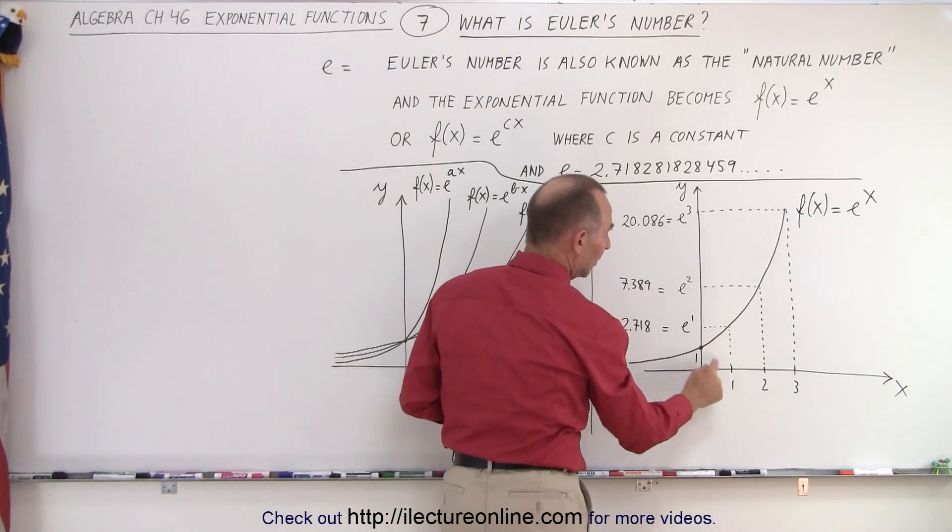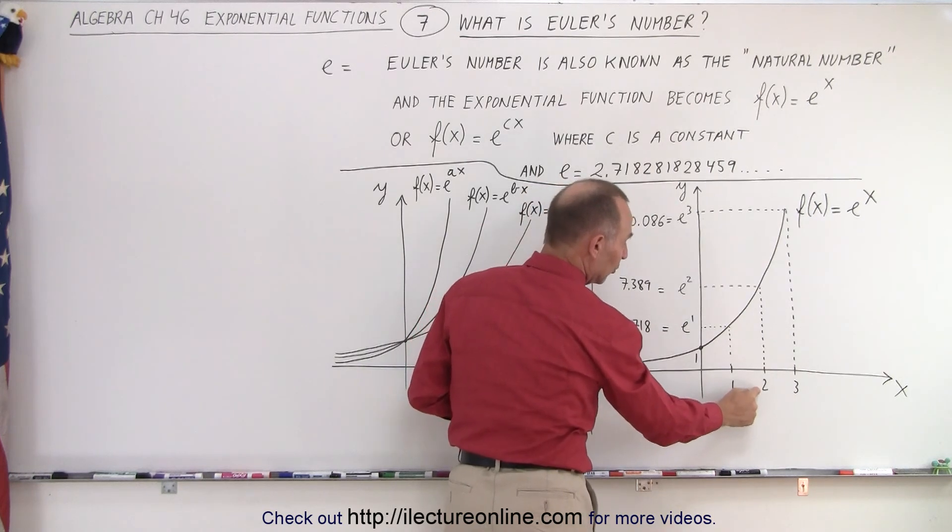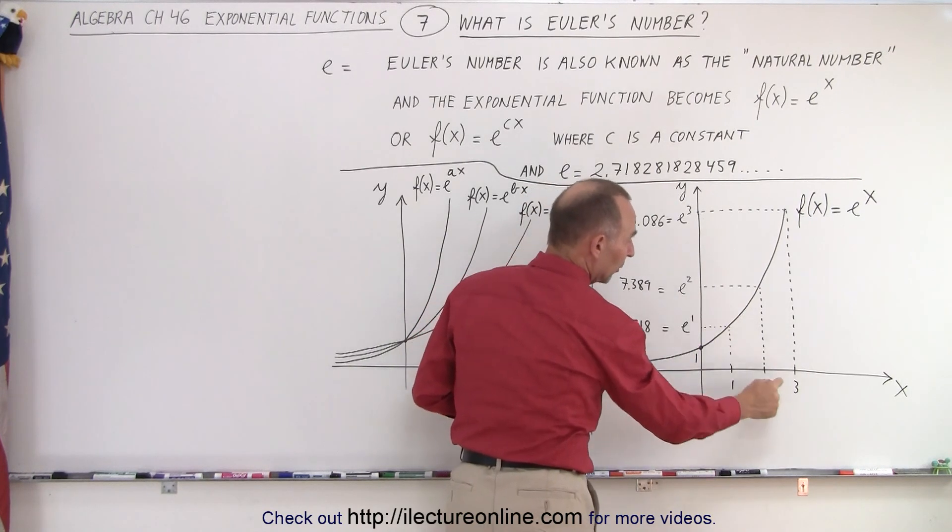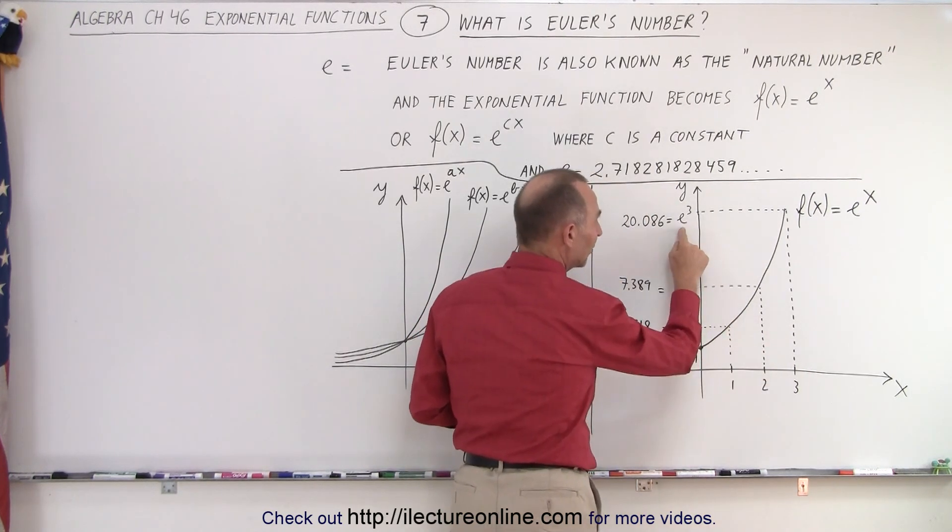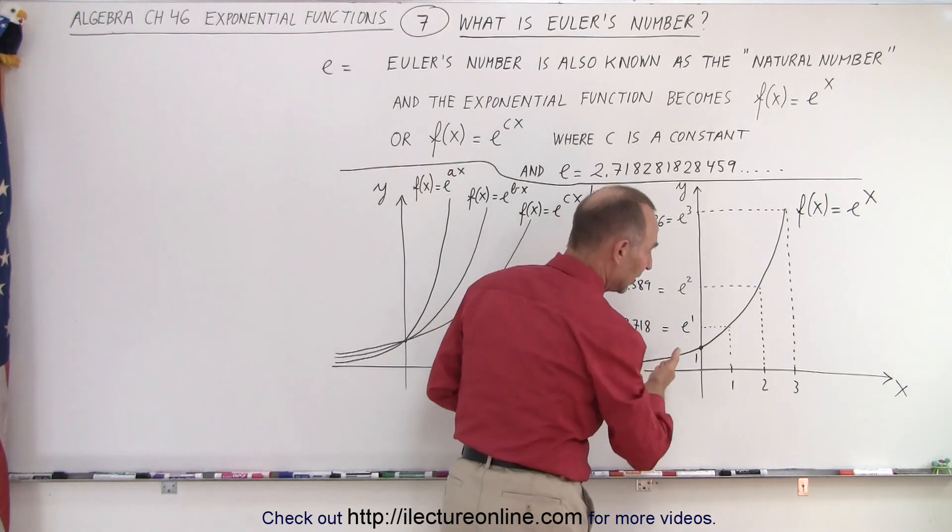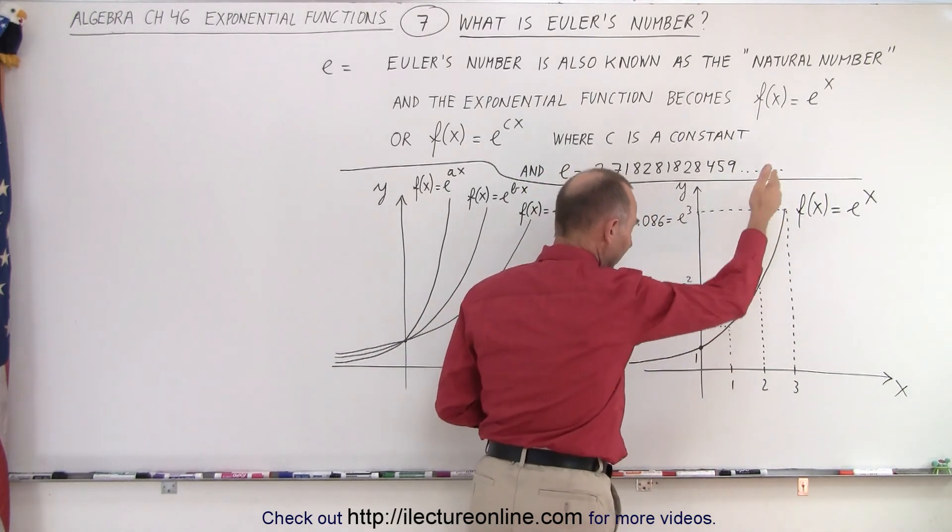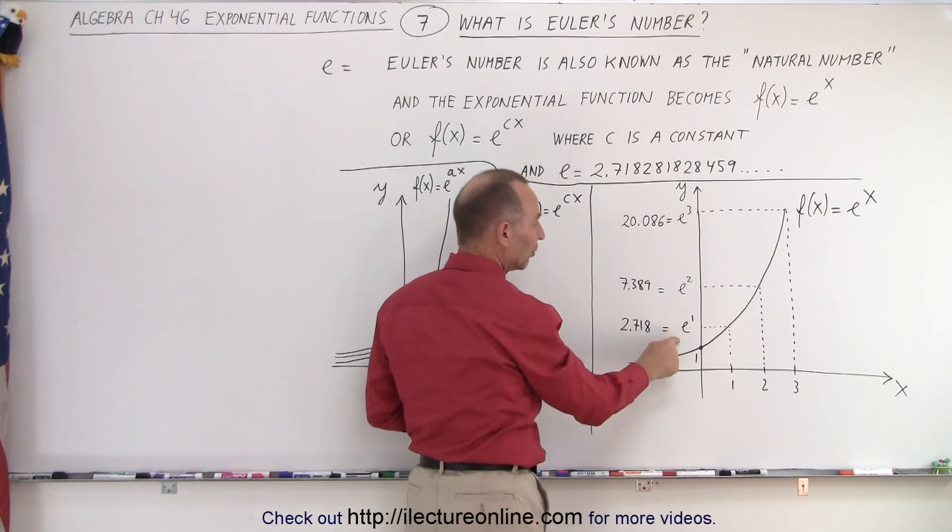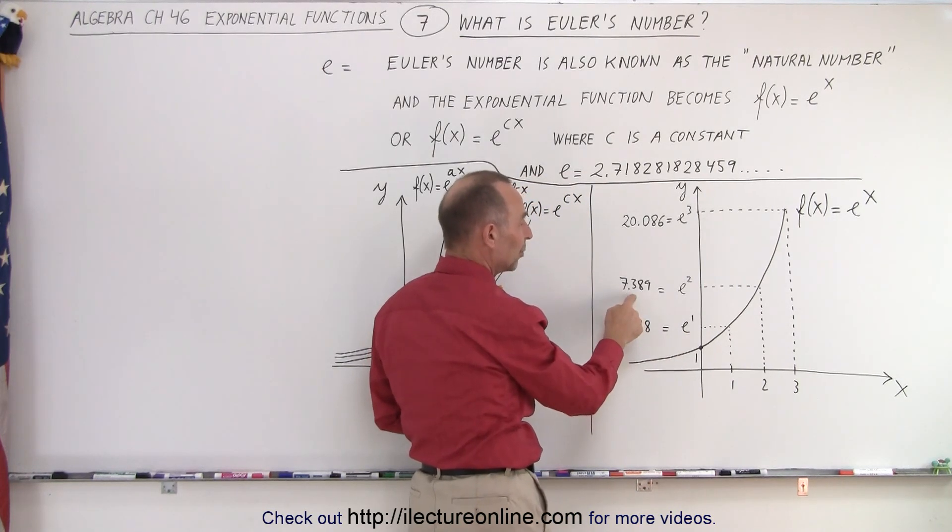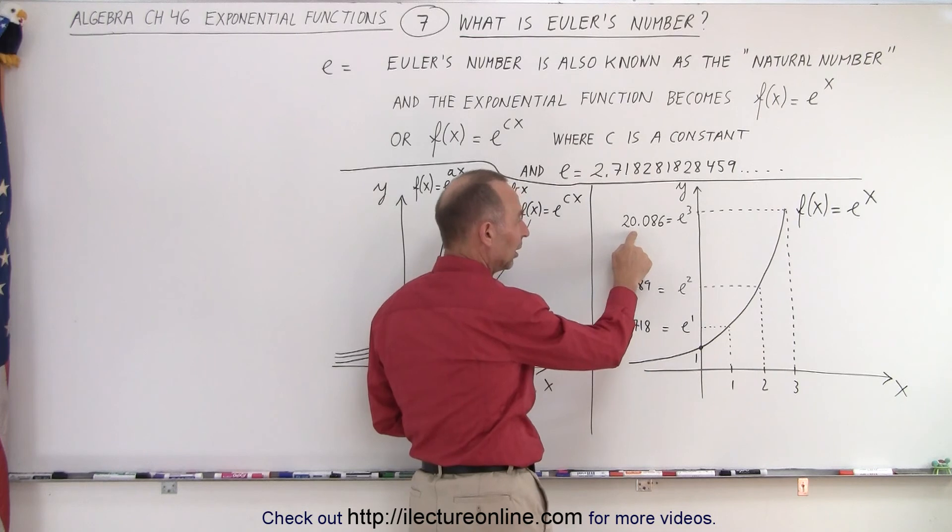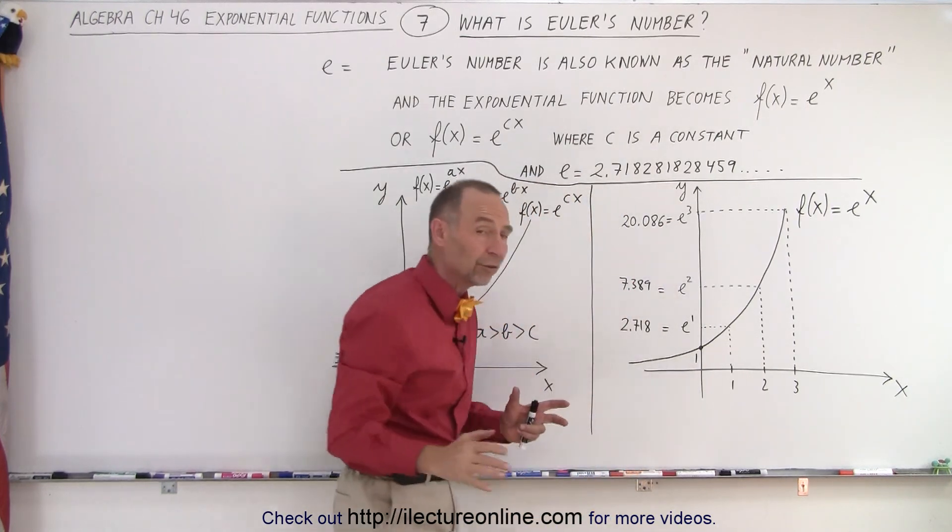When x equals 1, y is e to the 1 power. When x equals 2, y is e to the 2 power. When x equals 3, y is equal to E to the 3rd power. So, you can see that it continues to grow much more quickly as it goes on. So, E to the 1st power is 2.718, E to the 2nd power is 7.389, a little over 20 is E to the 3rd power, and so forth.